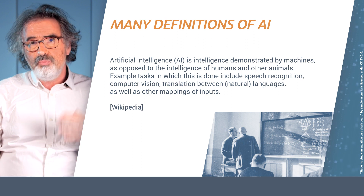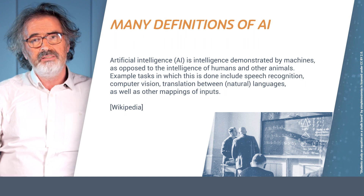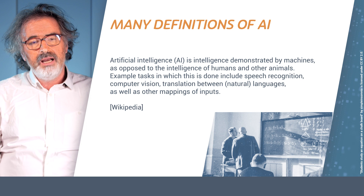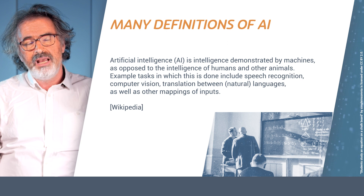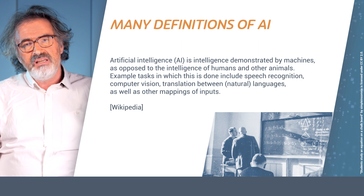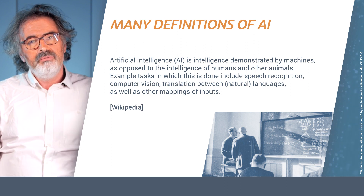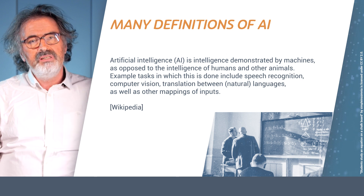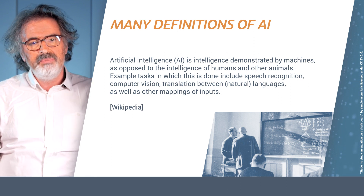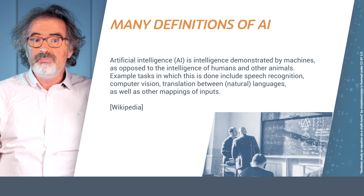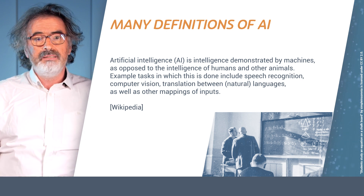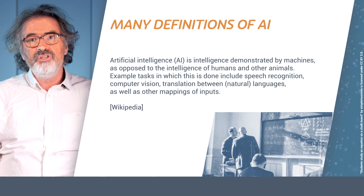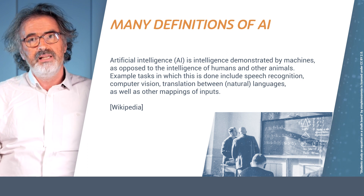If I look at Wikipedia, which is a very nice place to look for definitions, I will read something like this: it is artificial because it is not human or it is not animal. And instead of defining it per se, we will just define some of the different ways in which it can be enacted. We know that speech recognition, vision, translations, and many other operations are part of artificial intelligence.